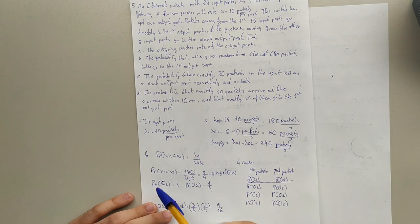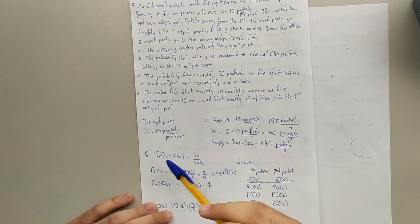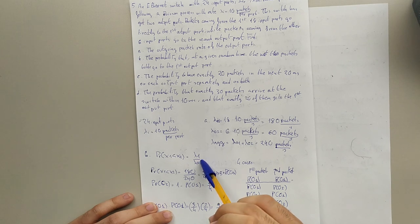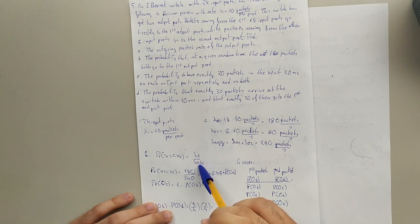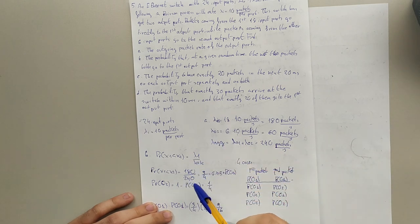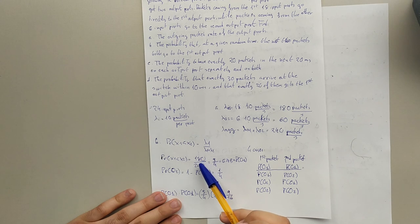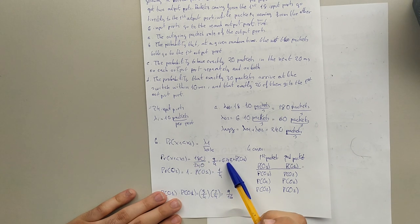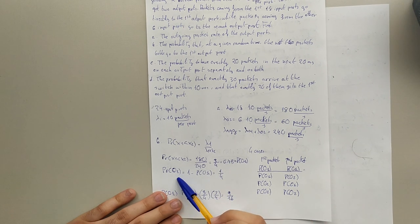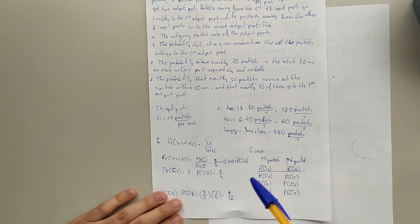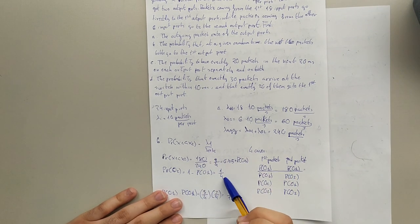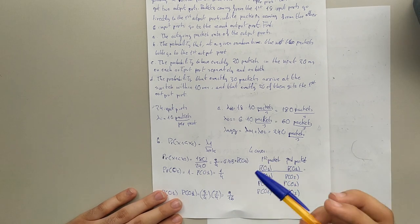For part B, I've calculated the probability using the formula where the probability is lambda_i divided by lambda total. For the first 18 input ports, the probability is 180 divided by 240, so 0.75. For the probability of the second group of 6 input ports, it will be 1 minus 0.75, which is 0.25. We have to distinguish four cases.